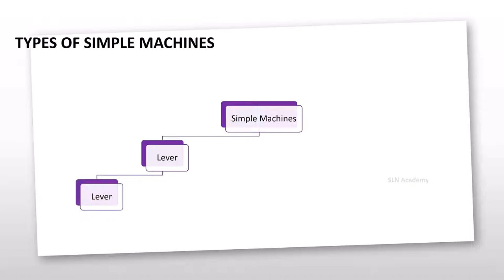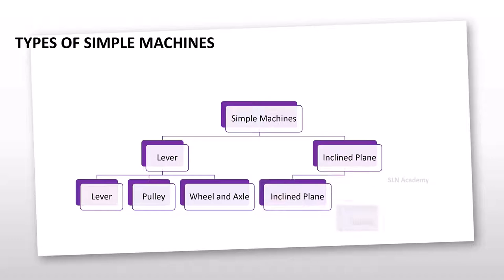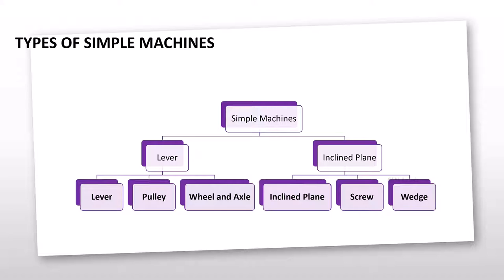Types of simple machines. There are six types of simple machines present. They are Lever, Pulley, Wheel and axle, which are somewhat related to lever type only, Inclined plane, Screw, and Wedge. Screw and wedge are related to inclined plane.